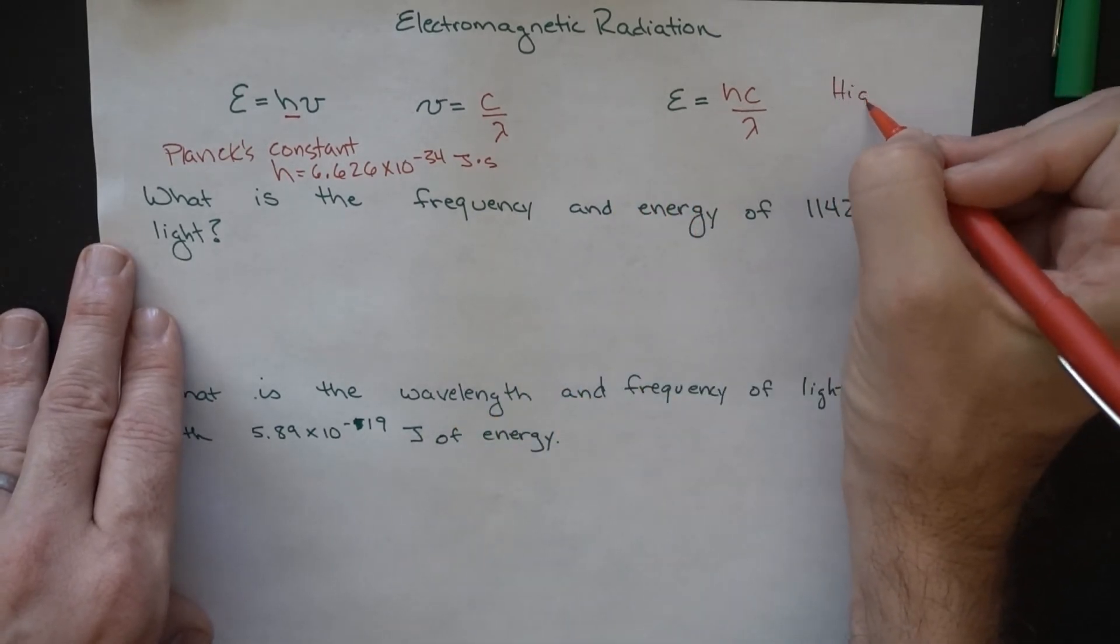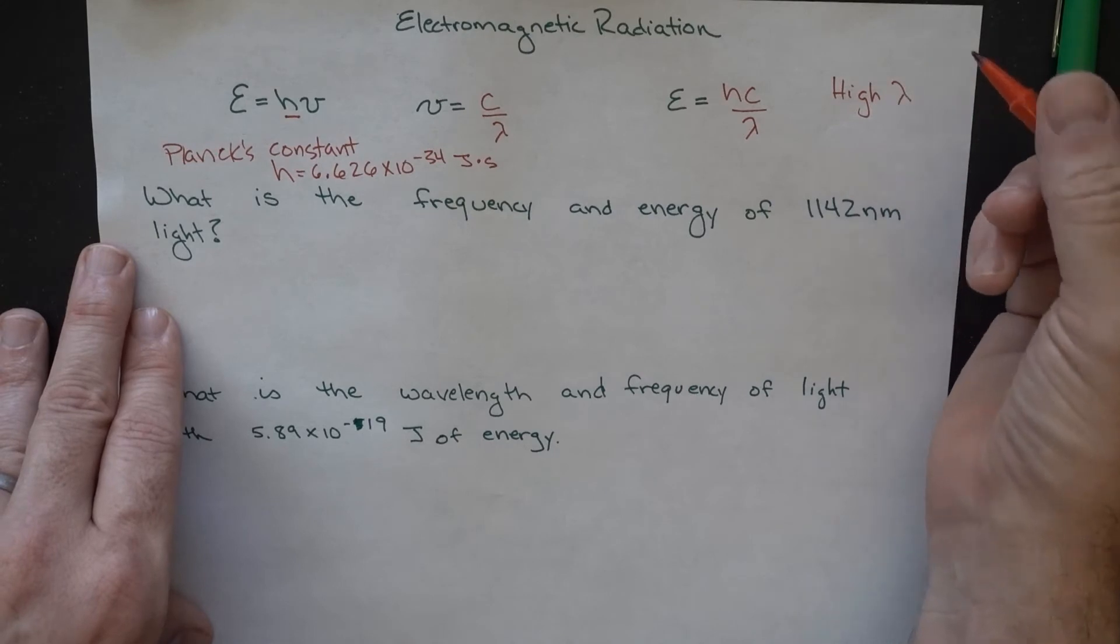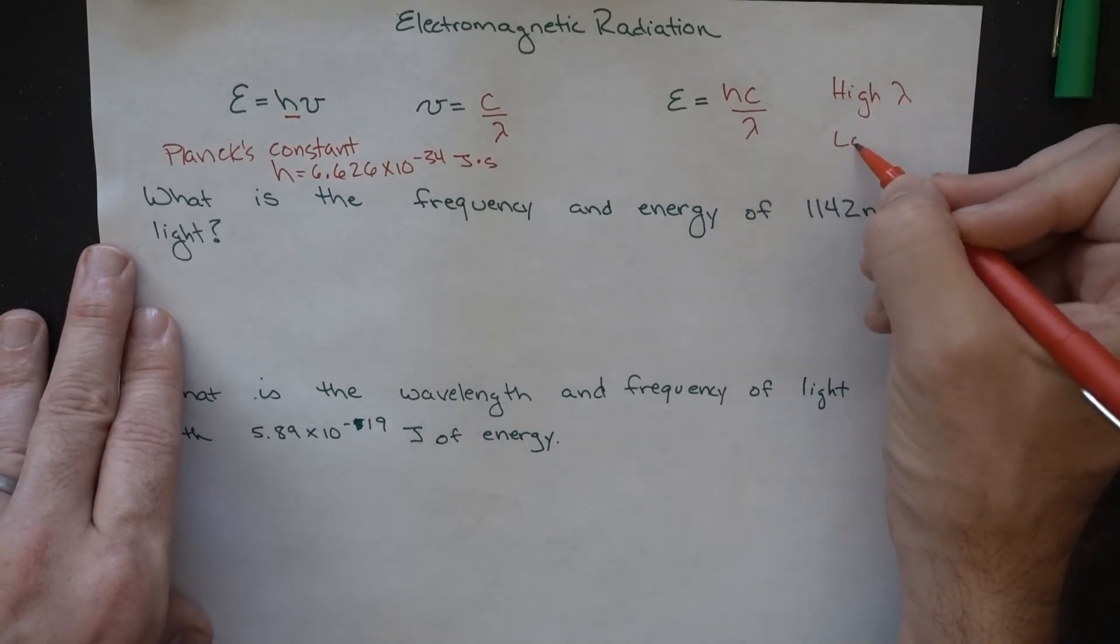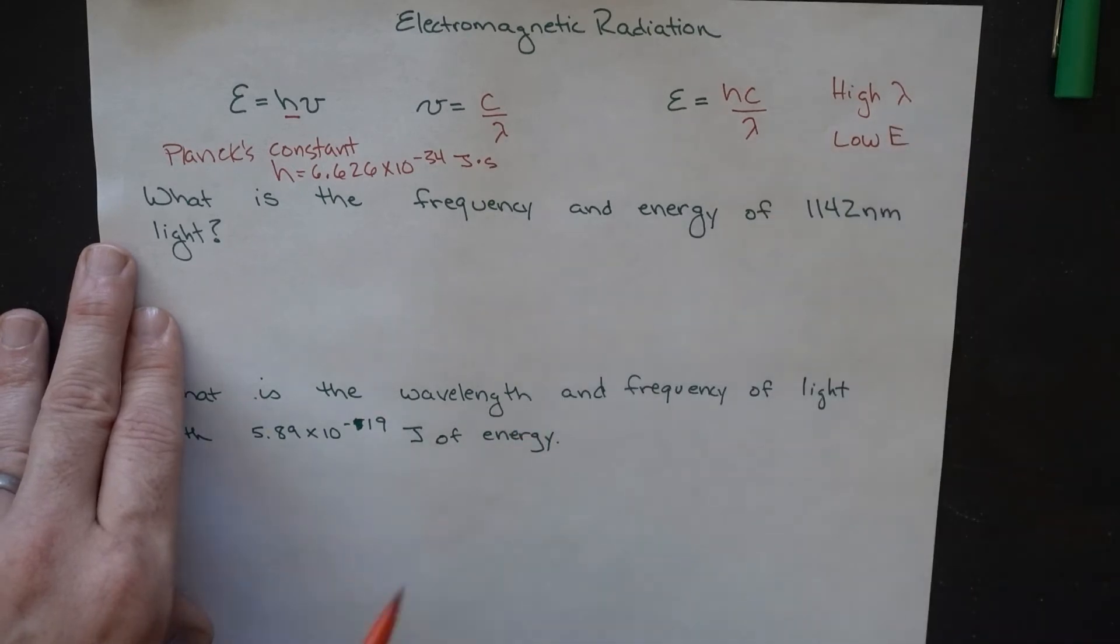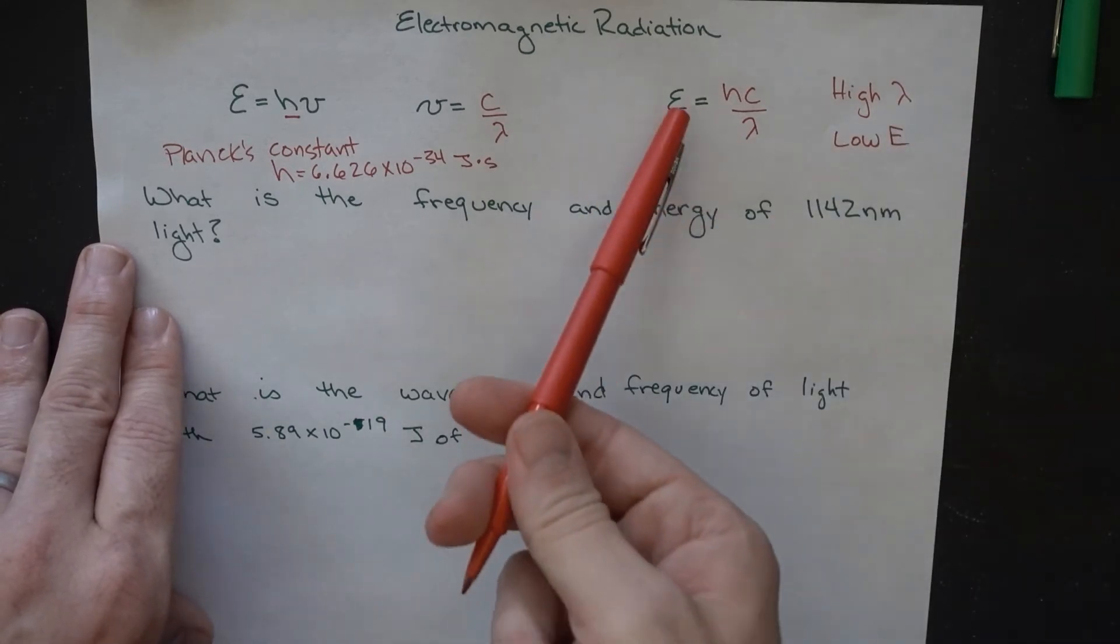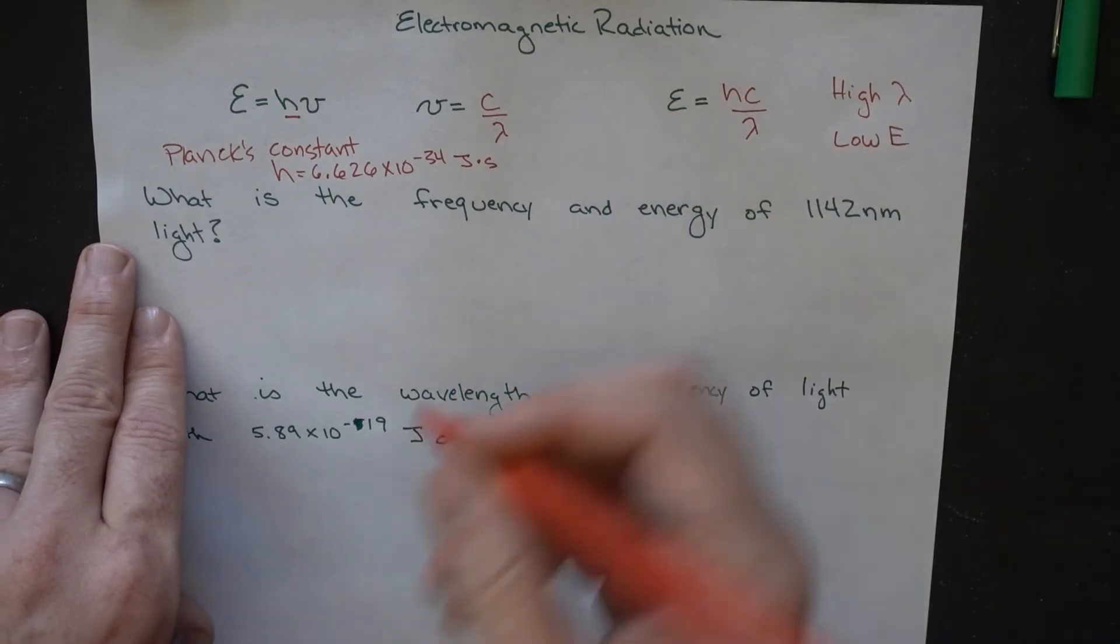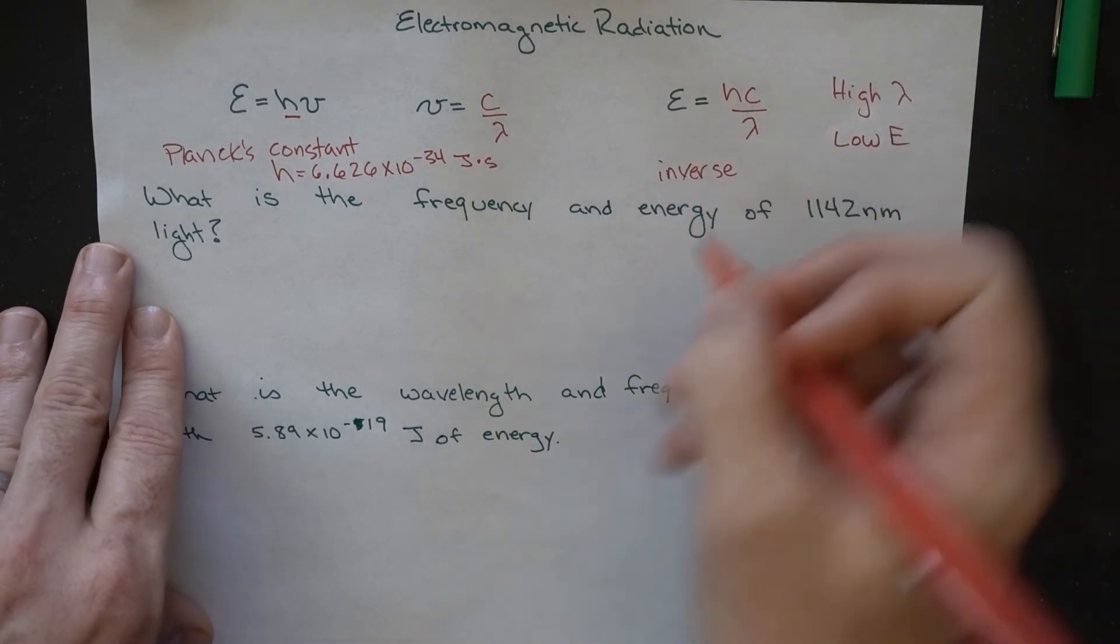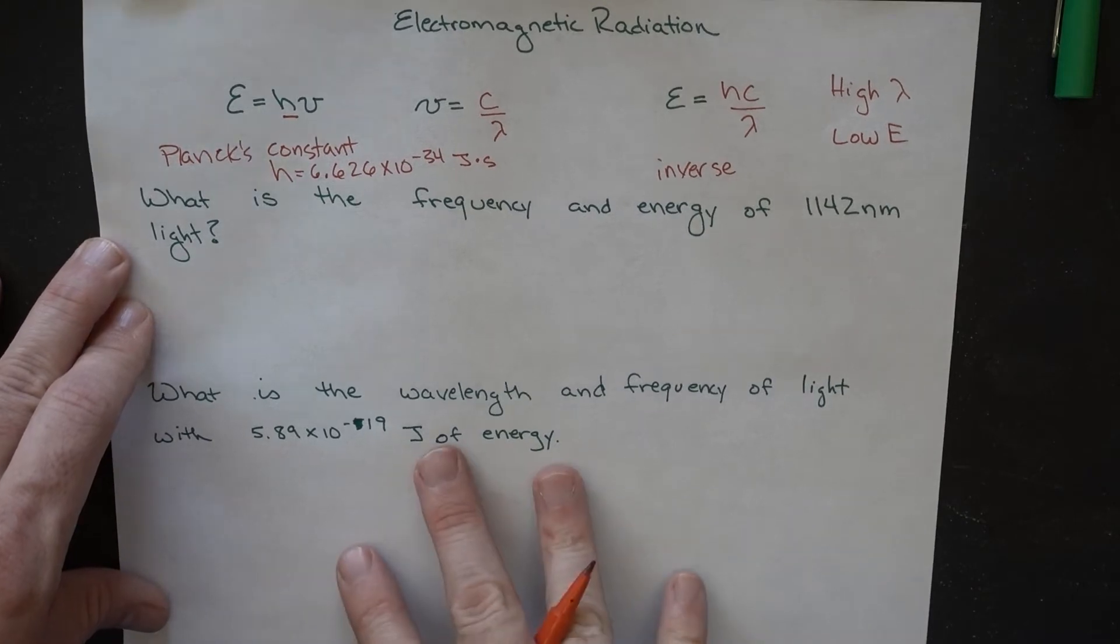Basically, if we have a high value of lambda, that means that the denominator here is big, so that means we're going to have a low value of energy. So, these two, again, would be inversely proportional. We can use this to answer some more problems.